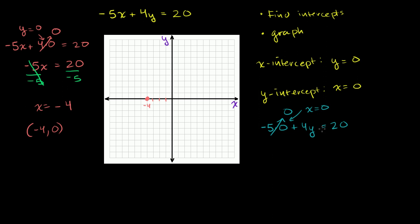This was setting x equal to 0. We're doing the y-intercept now. So this just simplifies to 4y is equal to 20. We can divide both sides of this equation by 4 to get rid of this 4. And you get y is equal to 20 over 4, which is 5. So when x is equal to 0, y is equal to 5.